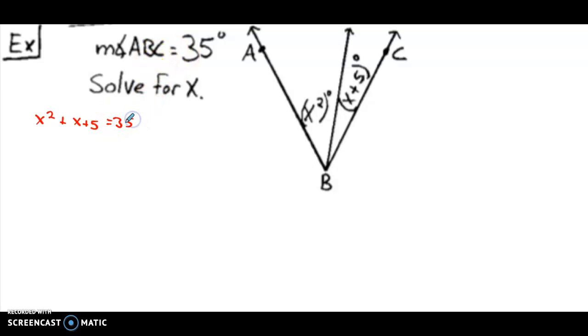Just like with the segment addition postulate, when we have the different powers of x, we have to set everything equal to 0. So we're going to subtract 35 from both sides. That gets us our equal to 0. On the left side of the equal sign, we got our x squared, we got our plus x, and 5 minus 35 is minus 30. Now once this is all set equal to 0, we are going to do some factoring. We're looking for two quantities to multiply together to equal x squared plus x minus 30.